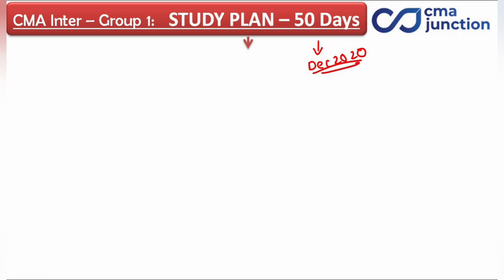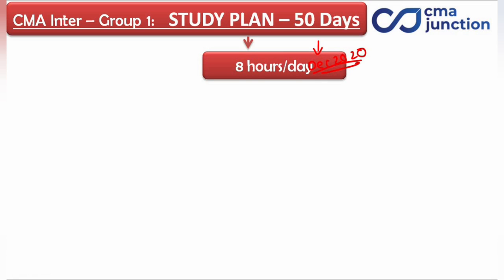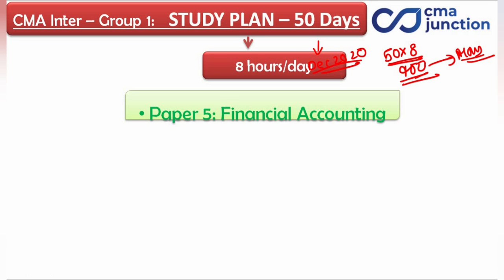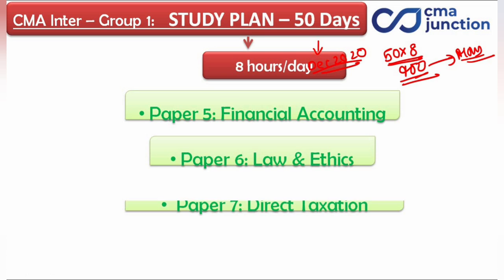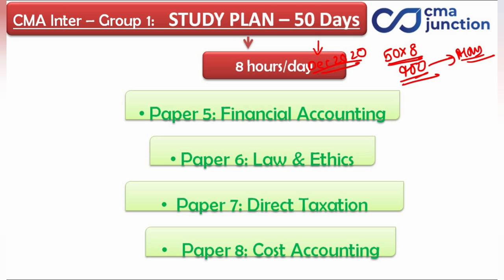In these 50 days, you need to study for 8 hours per day. So 50 days times 8 hours gives you 400 hours. As we know, in Group 1 we have 4 subjects, so accordingly we have 400 hours which is more than enough.